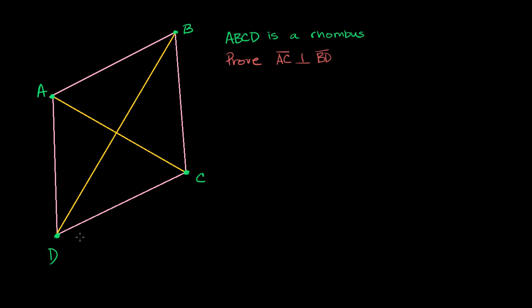Now let's think about everything we know about a rhombus. First of all, a rhombus is a special case of a parallelogram. In a parallelogram, the opposite sides are parallel. So that side is parallel to that side. These two sides are parallel.